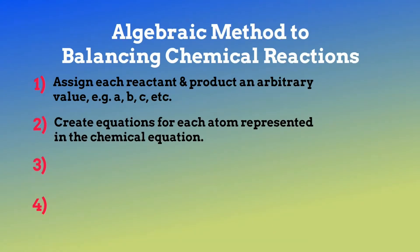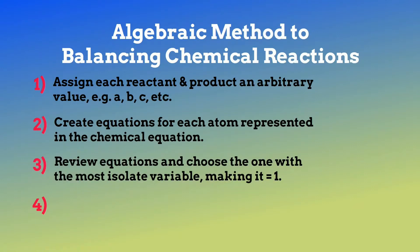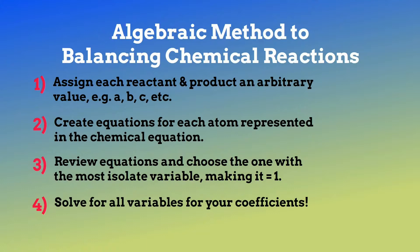Next, we'll create equations for each atom represented in the chemical equation, so we will have four equations: one for carbon, hydrogen, chlorine, and oxygen. We will look at our equations and choose the one with the most isolated variable and assign that variable to equal one. Lastly, we will go through each equation solving for all variables starting from the one assigned as one, then place the variables in front of their constituents as coefficients.